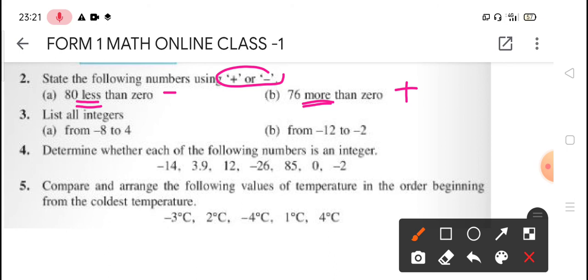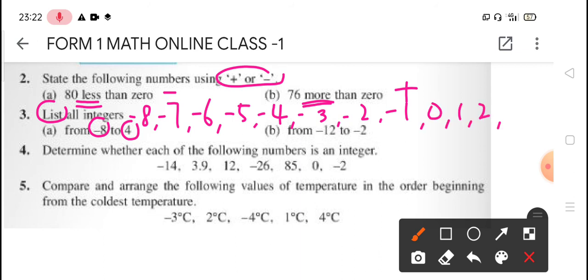Number 3, list all the integers. List means you need to list out, write everything, write all the integers. From means starting from negative 8. So we have negative 8, negative 7, negative 6, negative 5, negative 4, negative 3, negative 2, negative 1. Where do we stop? Until 4. So we continue, 0, 1, 2, 3, 4. So this is answer for 3A.